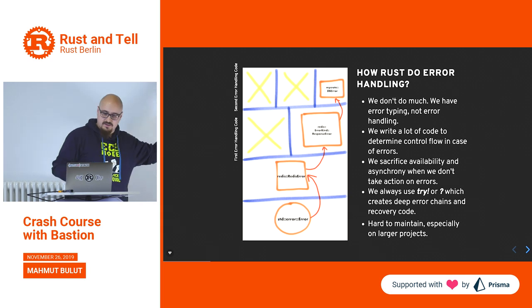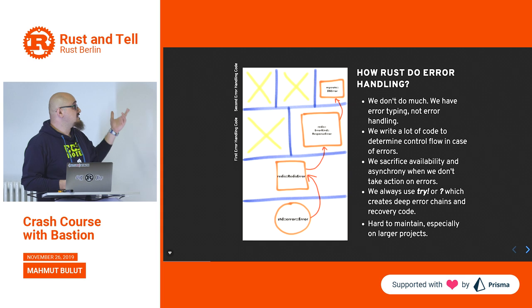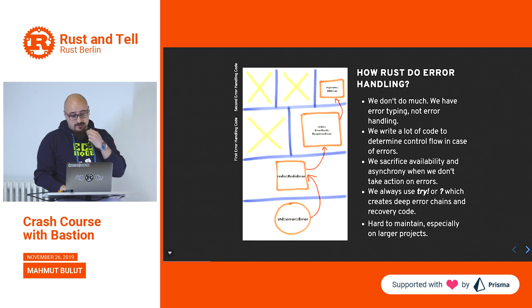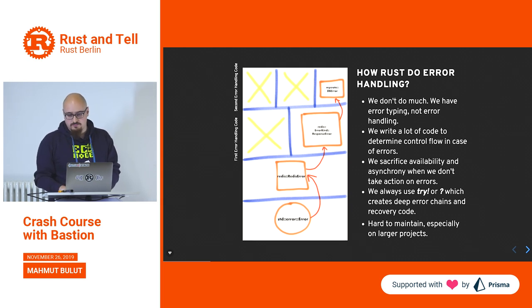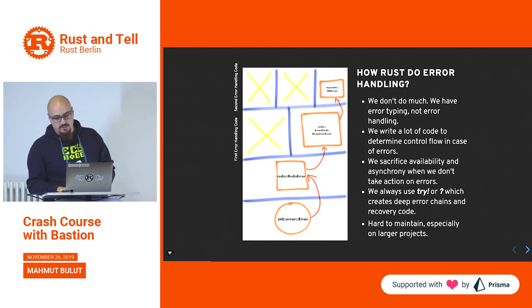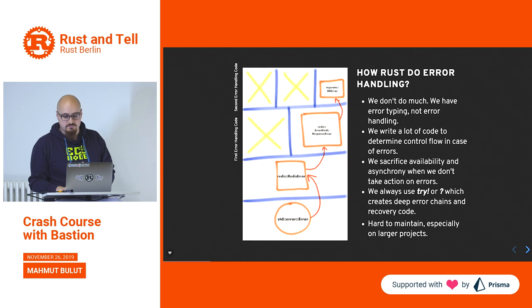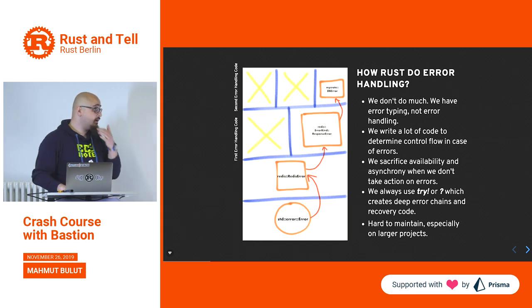In this example, a response error coming from the Redis client is basically propagated to your error type — let's say with the error-chain crate. When we do this error handling, we sacrifice availability, we also sacrifice asynchrony, and we don't take action on errors. We always use try or question mark, which creates long error chains and long recovery code that is hard to maintain when the project gets bigger.